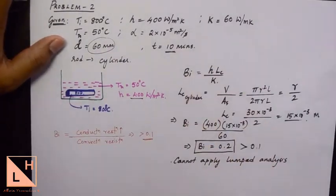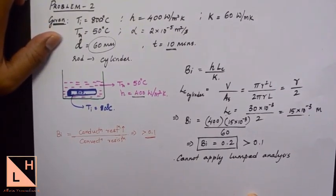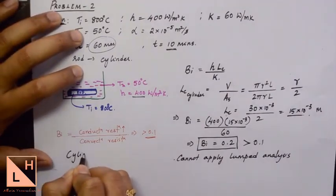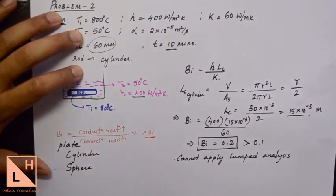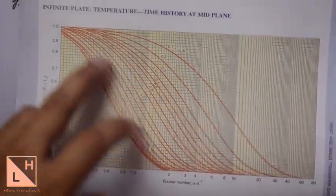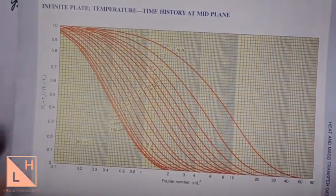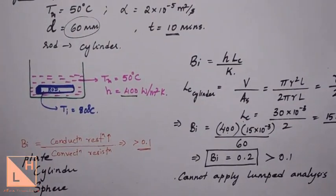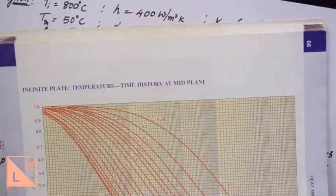When lumped analysis cannot be applied, we cannot use formulas derived assuming lumped analysis. To solve problems with Biot number greater than 0.1, we use another method: charts available in the data handbook based on experimental data, useful for standard shapes. These standard shapes are cylinder, sphere, or flat plate. For each shape there are different charts, including one for the infinite plate to find temperature-time history at the mid plane, found on page 66 in the 8th edition Kodanraman data handbook.